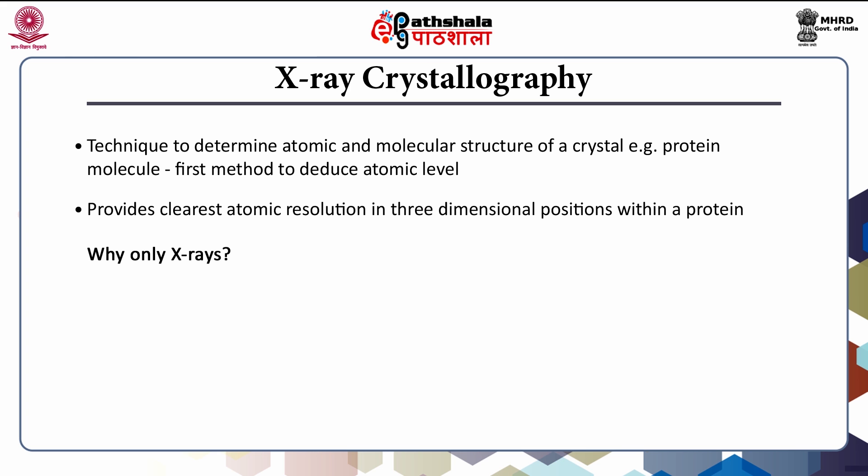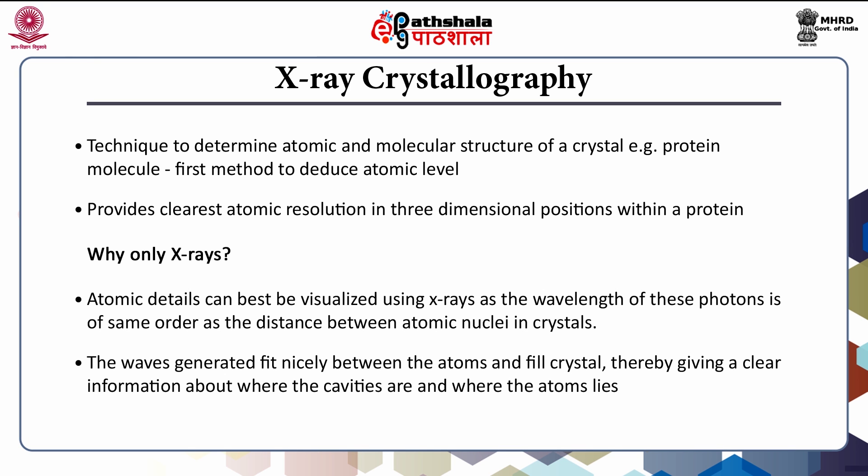Why do we need to choose X-rays for the determination of protein structure or any biomolecular structure rather than any other radiation? One of the reasons is that out of all forms of radiation, X-rays provide the best resolution for the determination of molecular structures, because the wavelength of X-rays is approximately similar to that of a covalent bond. That is why X-rays are chosen for the determination of protein structures or any molecular structure of larger molecules.